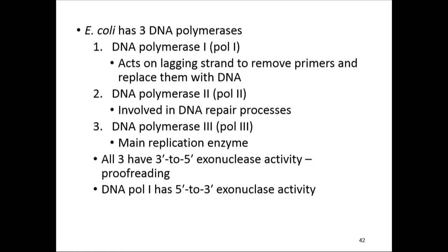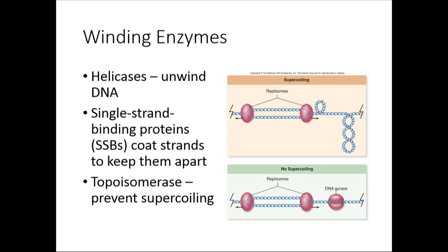There are multiple DNA polymerases in prokaryotes. DNA polymerase I acts on the lagging strand, removes RNA primers, and replaces them with DNA. DNA polymerase II repairs errors. DNA polymerase III is the main replication enzyme, adding nucleotides to the end. All can read DNA for mistakes and remove nucleotides when necessary — that ability is called exonuclease activity. DNA polymerase I can do this in the five-prime to three-prime direction.